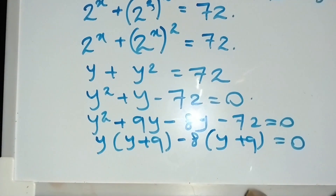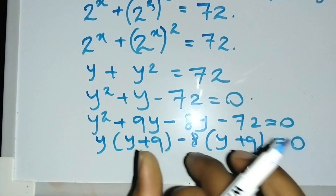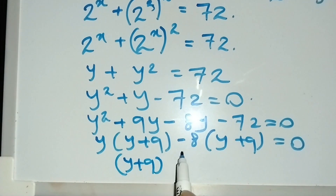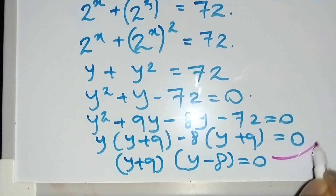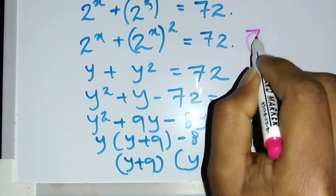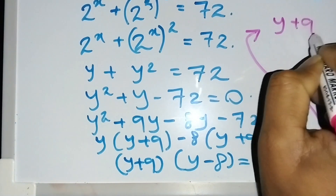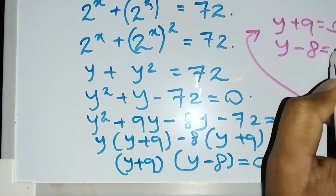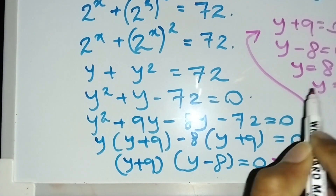Since (y plus 9) is a common factor, I can factor it out. This gives (y plus 9)(y minus 8) equals 0. So the solutions are y equals negative 9 or y equals 8.